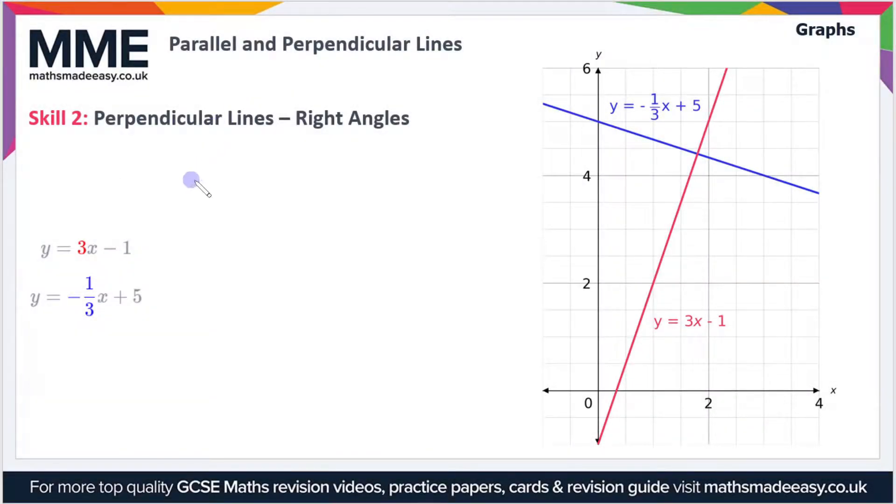So what about perpendicular lines? Well, perpendicular lines are at right angles to each other, so the gradients are not the same, but their gradients do multiply to give negative one. So if we have a look at these lines here...